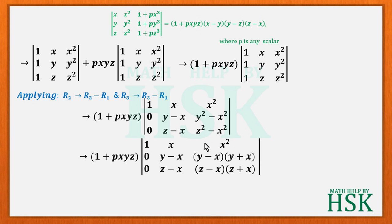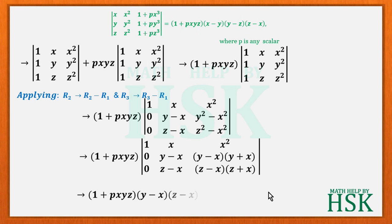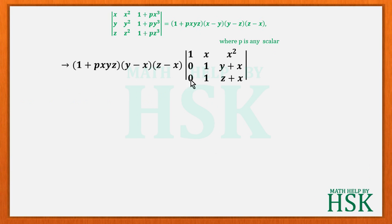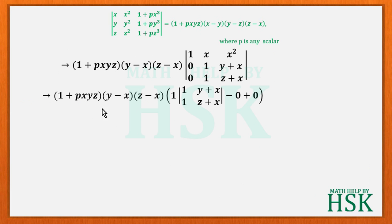Factorizing gives y²−x² = (y−x)(y+x) and z²−x² = (z−x)(z+x). We take (y−x) common from the second row and (z−x) common from the third row, giving (1+pxyz)(y−x)(z−x) times the determinant (1, x, x²; 0, 1, y+x; 0, 1, z+x).